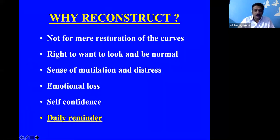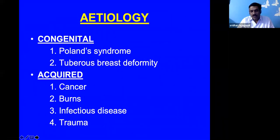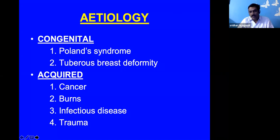Why should we reconstruct? Not for mere restoration of curves. We want to look and be normal. There is a sense of mutilation and distress after removing the breast — emotional loss, loss of self-confidence, and a daily reminder that part of the breast is missing. There are various etiologies: congenital or acquired. Common congenital ones include Poland and tuberous breast deformities. Acquired causes include malignancy, burns, and infectious disease. My concentration will be on post-malignancy breast reconstruction.